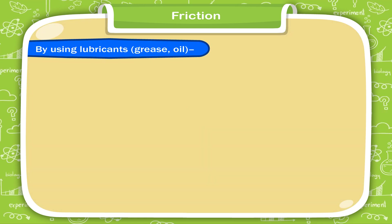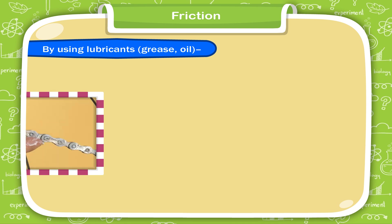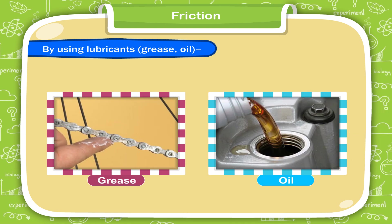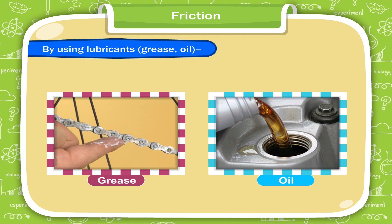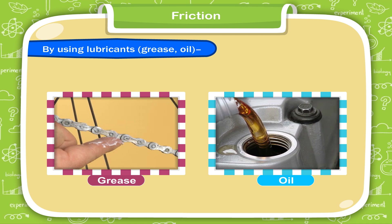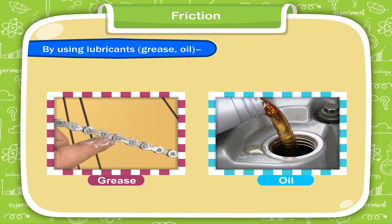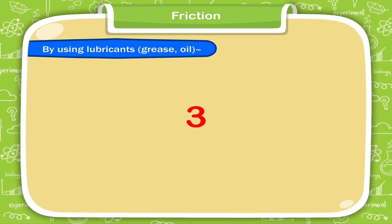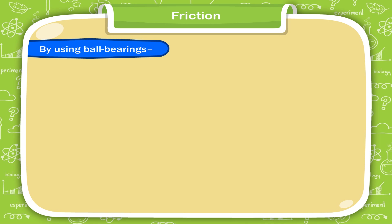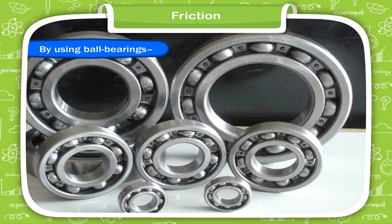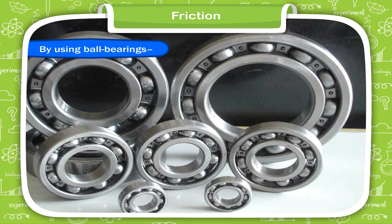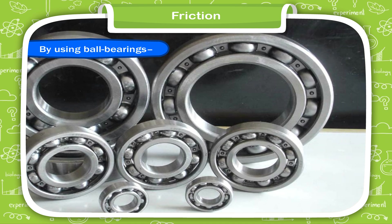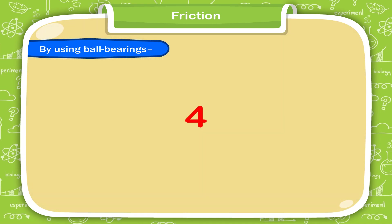2. By using lubricants such as grease and oil. When a lubricant is used between two surfaces in contact, it forms a thin layer between the surfaces and reduces friction. 3. By using ball bearings — small balls or rollers made of steel are placed between the two moving surfaces to reduce friction.